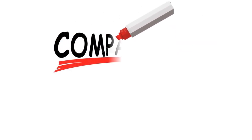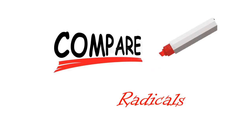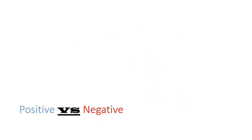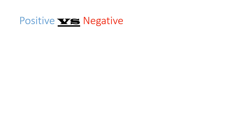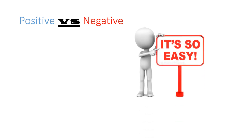In this video we are going to talk about how to compare radicals. Let's start with the first case: positive versus negative. If you have 17√3 and negative √11, which one is greater? Of course, because one is positive and the other is negative, you know that 17√3 is greater.